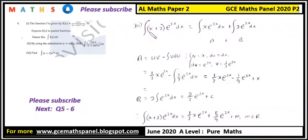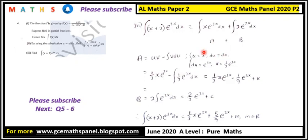To find the integral of (x plus two) times e to the power 3x dx, we break it into two parts: A equals x times e to the power 3x, and B equals two times e to the power 3x. For part A, using integration by parts, let u equal x so du equals dx, and let dv equal e to the power 3x so v equals one third e to the power 3x.